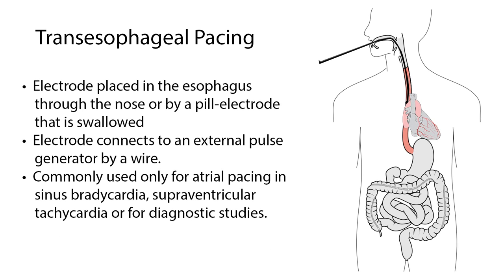Transesophageal pacing involves placing an electrode in the esophagus through the nose or by a pill electrode that is swallowed. The electrode connects to an external pulse generator by a wire. This type of pacing is commonly used only for atrial pacing in sinus bradycardia, supraventricular tachycardia, or for diagnostic studies.